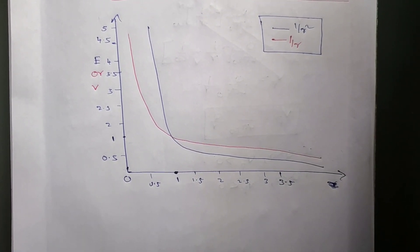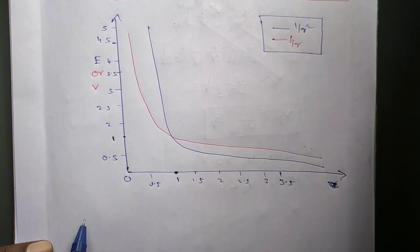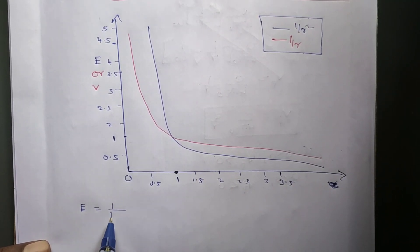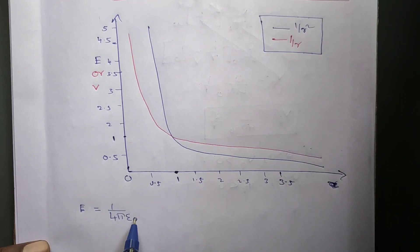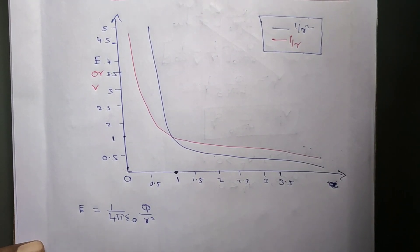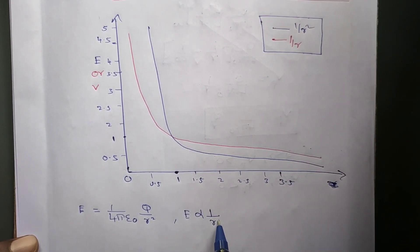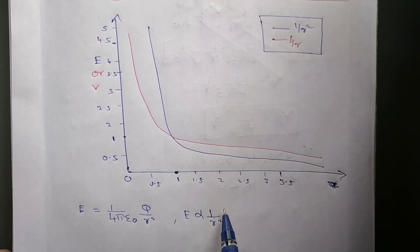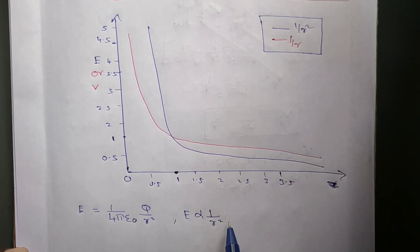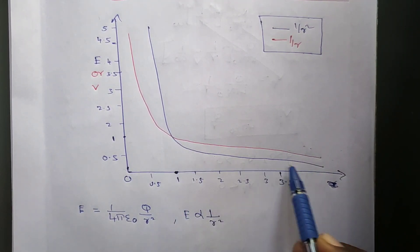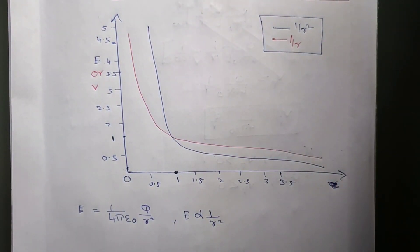What is the formula for electric field? The electric field produced by a point charge is E = (1/4πε₀) × Q/r². That means the electric field is inversely proportional to the square of the distance. This means the graph is a parabola — you can see the blue line looks like a parabola.